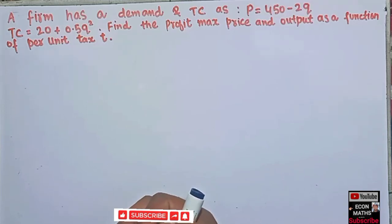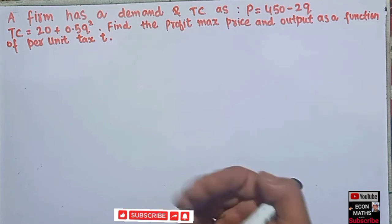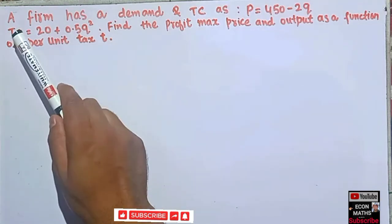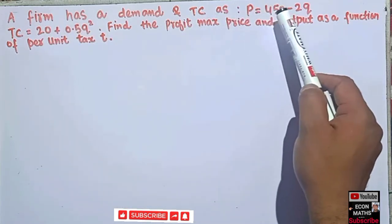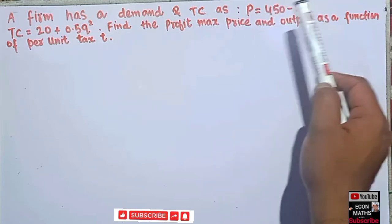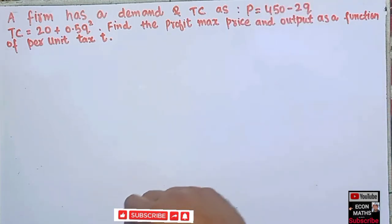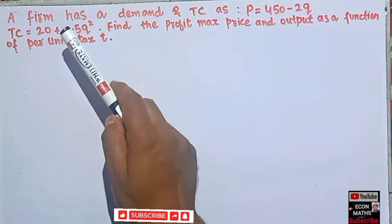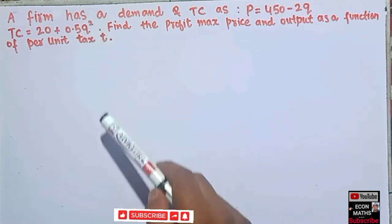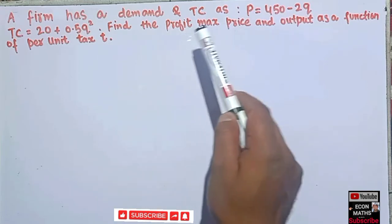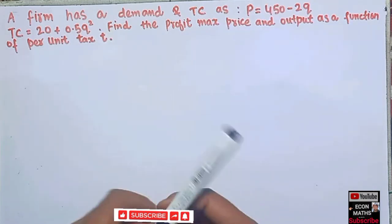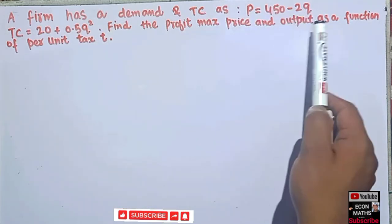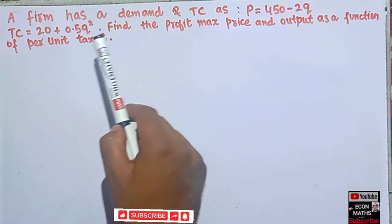In this video we will try to solve a problem asked by a friend, Parvin Sultana, on YouTube. The question is: a firm has a demand and total cost given as p = 450 minus 2q, where p is the price and q is the quantity. The total cost is given as 20 plus 0.5q squared. Find the profit-maximizing price and output as a function of per unit tax.